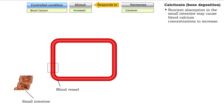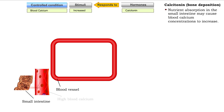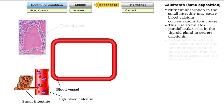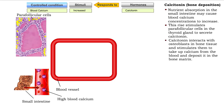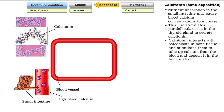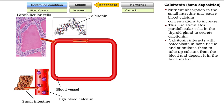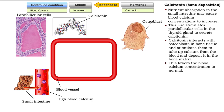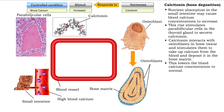Nutrient absorption in the small intestine may cause blood calcium concentrations to increase. This rise stimulates parafollicular cells in the thyroid gland to secrete calcitonin. Calcitonin interacts with osteoblasts in bone tissue and stimulates them to take up blood calcium and deposit it in the bone matrix. This lowers the blood calcium concentration to normal.